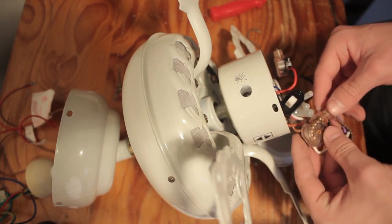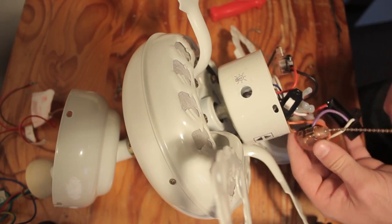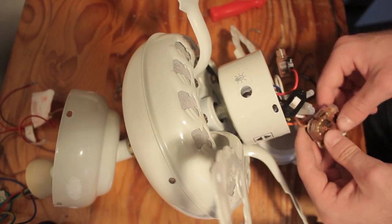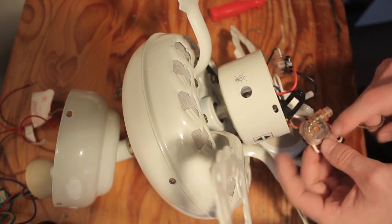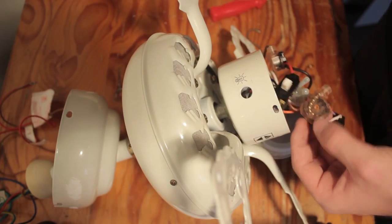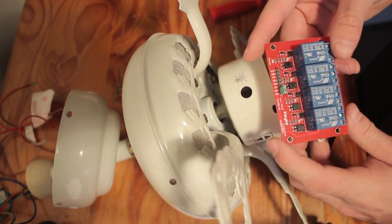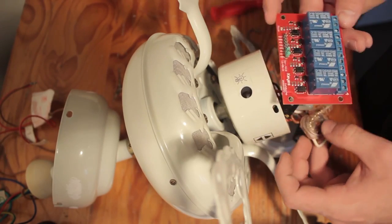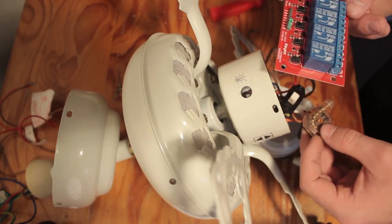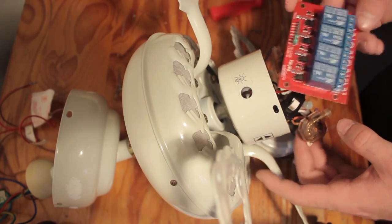So what we need to do is we need to take this fan apart, essentially. We need to disconnect this, because what we're going to do is instead of using this rotary switch, we're going to use this relay board to control that. So let's start actually moving on to building the control unit.